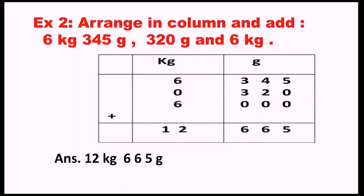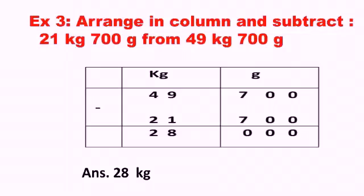An important thing is to write the final answer clearly so we can distinguish the kg part and the gram part — that means 12 kg 665 gram. Now look at the third example: arrange in column and subtract 21 kg 700 gram from 49 kg 700 gram. Here also two different units are involved.